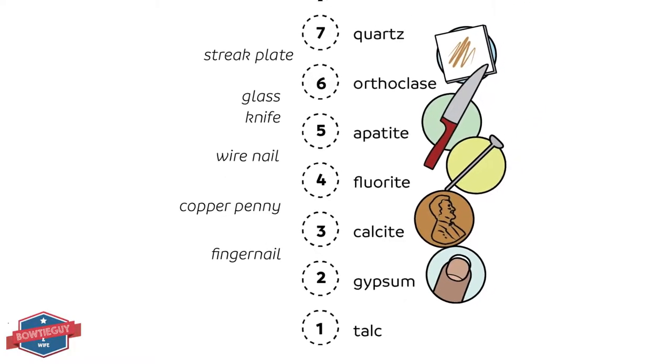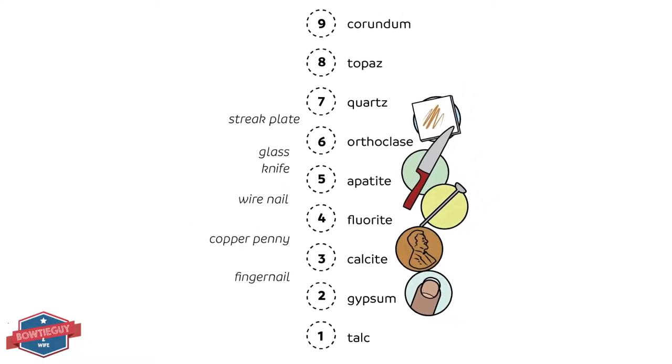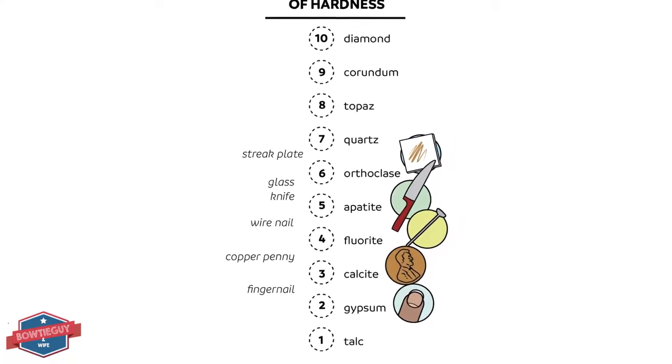If you look at number one, that is talc. That is the softest mineral on earth. And number ten is a diamond. It is the hardest mineral on earth. The only thing that can scratch a diamond is another diamond.